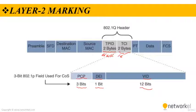The PCP field is the priority code point field. The DEI field is the drop eligible indicator — a 1-bit field that can be used independently or in conjunction with PCP to indicate frames eligible to be dropped during times of congestion. VID is the VLAN identifier, a 12-bit field that defines the VLAN used by 802.1Q. Since this field is 12 bits, it restricts the number of VLANs supported to 4096.